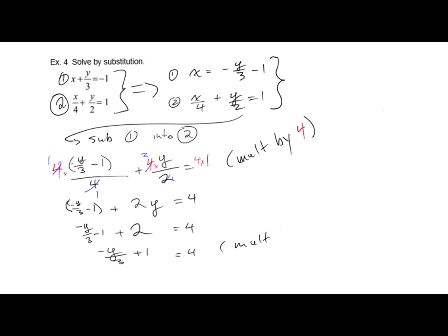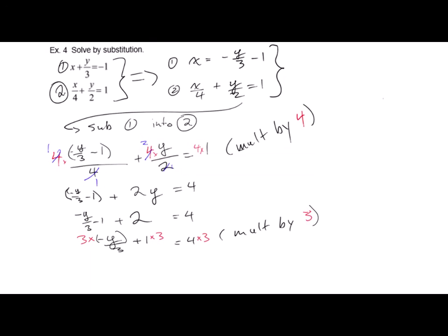I could move the 1 over to the other side, or I just multiply everything by 3. I just like multiplying by 3. Multiply everything by 3, and what will happen is you're going to get all that over 3, 1 times 3, and 4 times 3. So now you're going to get negative y, I believe, plus 3 is equal to 12.